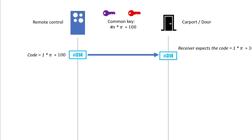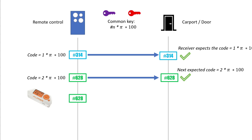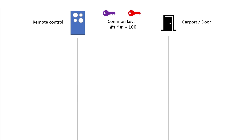So the sender sends the first code: 1 × π × 100 = 314, which is sent to the receiver. The receiver expects the same value because they share the same common key and algorithm — it matches, so it opens the door. The next code is 2 × π × 100 = 628, also a match. If you intercept and record 628 on your Flipper and try to replay it, it won't be accepted because that code has already been used.